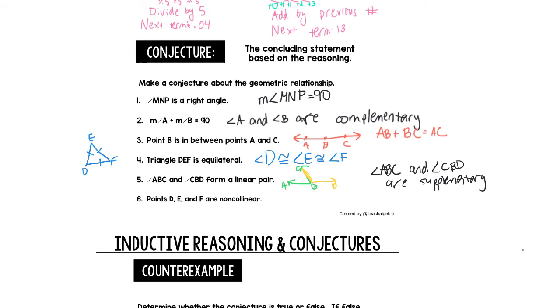Last one, points D, E, and F are non-colinear. It means they're not lying on the same plane. Well, we know that three lines make a plane. So that means points, plural, D, E, and F define a plane. It's just all the conjecture does is use what we know to describe something, to describe something that's happening.